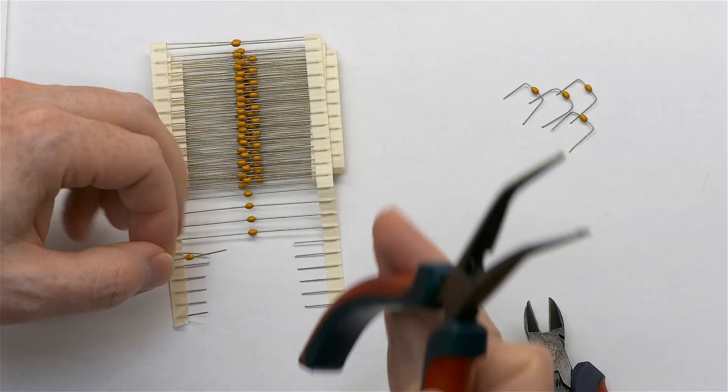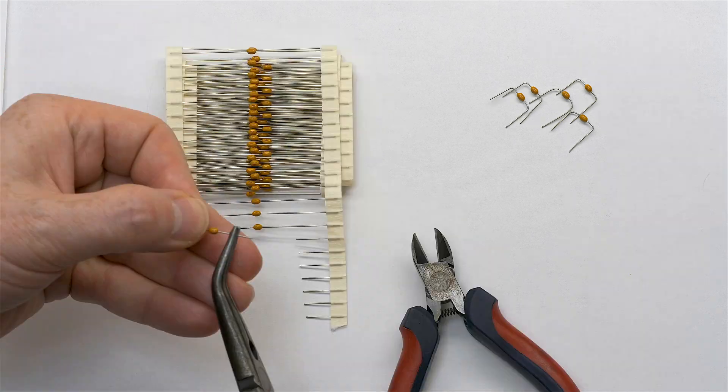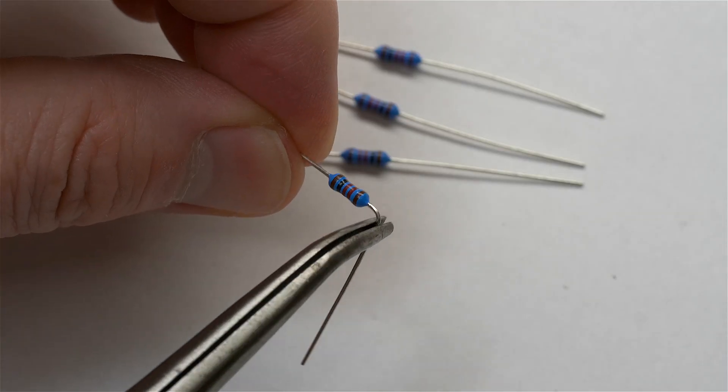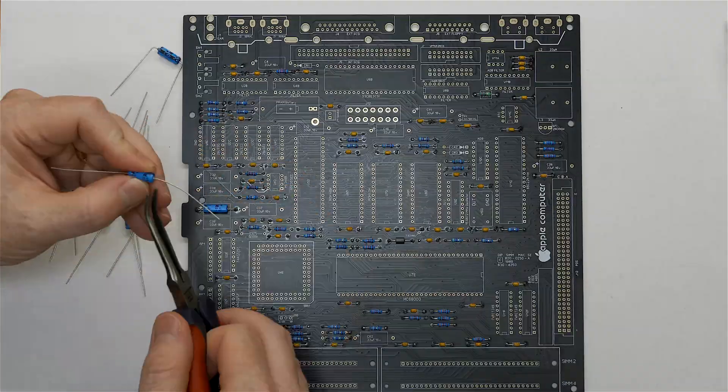If you watched my recent Macintosh SE Reloaded series, you saw me bending dozens of components by hand using only a pair of needle-nose pliers. Doing it that way requires skill, a steady hand, and good eyesight.